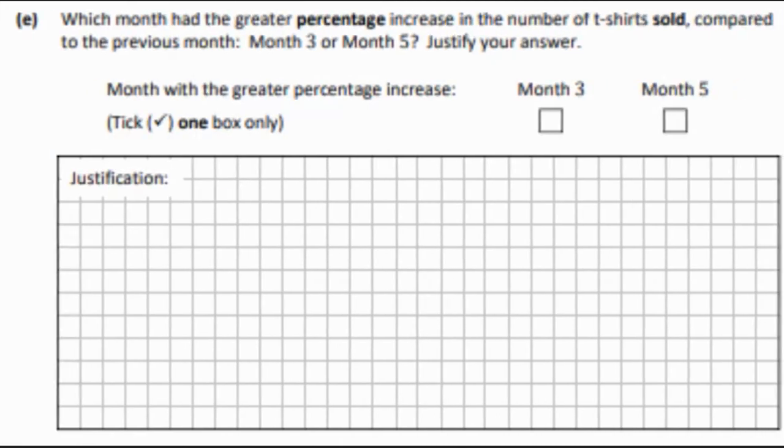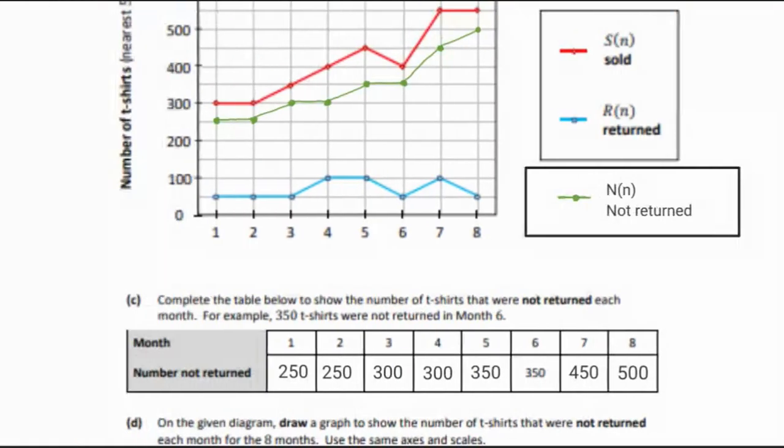Finally, we want to work out the greater percentage increase in either Month 3 or Month 5. We have to go to the previous month and get the difference between Month 2 to 3 and Month 4 to 5. Let's get those values and work them out.